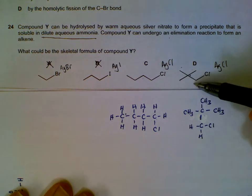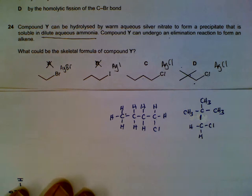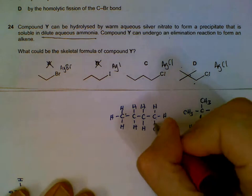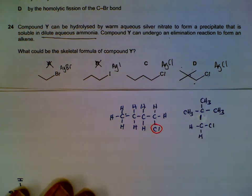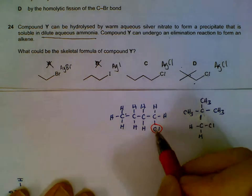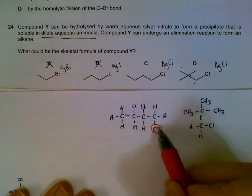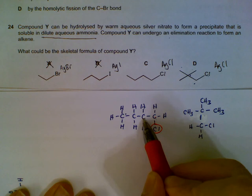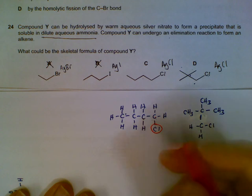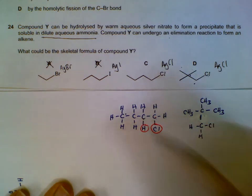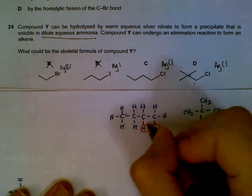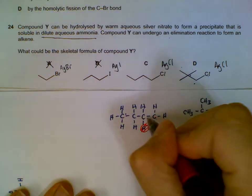For them to undergo elimination, what actually has to happen is we have to get rid of the halogen and we have to get rid of a hydrogen from a neighboring carbon. If you take a chlorine from this carbon, the carbon that's next to that particular carbon has to supply the hydrogen. When that happens we will get a double bond forming.